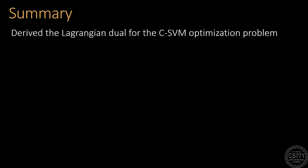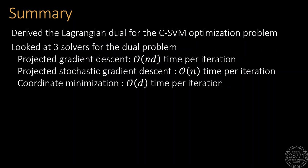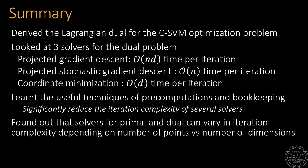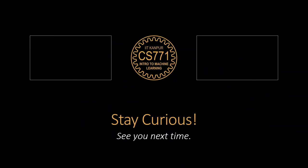Before wrapping up this discussion, let us summarize what we have studied today. Today, we derived a simplified form of the Lagrangian dual of the CSVM problem. We then looked at three solvers for the dual problem with different per step time complexities. While doing so, we learned about the useful techniques of bookkeeping and pre-computations which could greatly speed up the implementation of these solvers. Finally, we observed that the per step or iteration complexity of various algorithms can greatly depend on the number of data points as well as the model dimensionality. So, this is a good point to stop, stay curious, and I will see you next time.